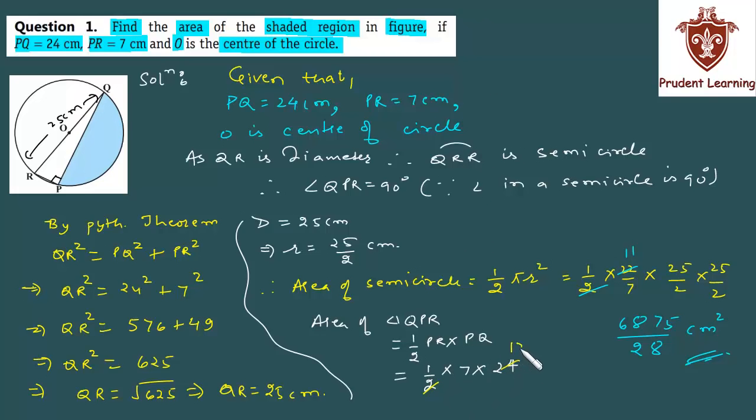This calculation is easy. 2 twelves are 24, 12 sevens are 84. So you get the triangle's area as 84 cm squared. Now you have the area of the semicircular part and the area of the triangle. So subtract the triangle's area from the semicircle's area, and you will get the area of the shaded region. I've told you several times what needs to be done. Finally, I'll solve it here.